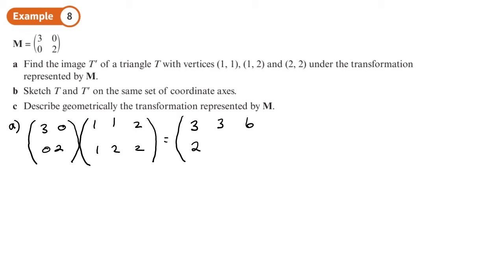The bottom row gives 2, 4, and 4. So that's going to be the image. Writing the points as coordinates, we've got (3, 2), (3, 4), and (6, 4) — reading each column of the result matrix.